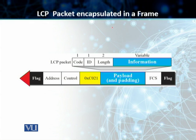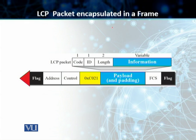Your LCP packet consists of, first of all, a one-byte code field, which contains different codes used for configuration, termination, acknowledgments, and so on. Then you've got an ID field that holds the value matching our request with our reply — every message gets assigned an ID. Then there's the length field, and then the actual LCP information in the payload part.